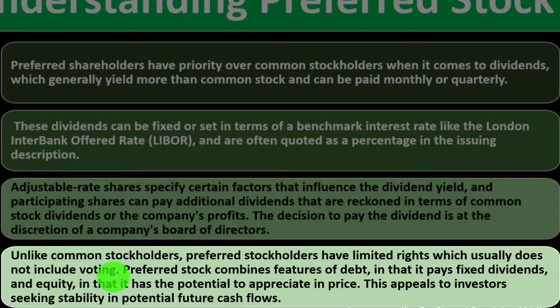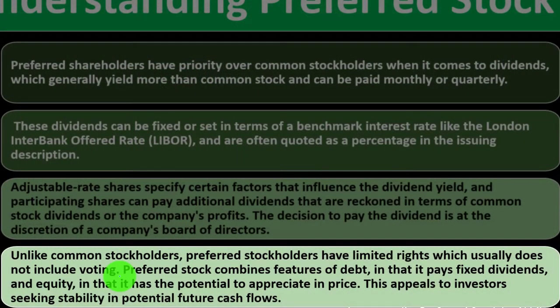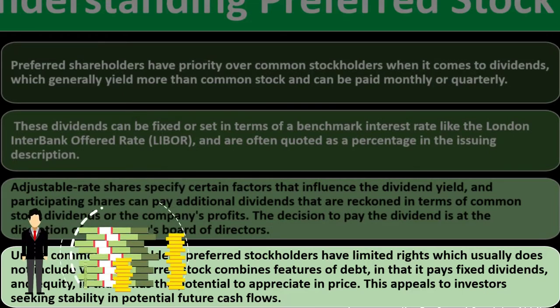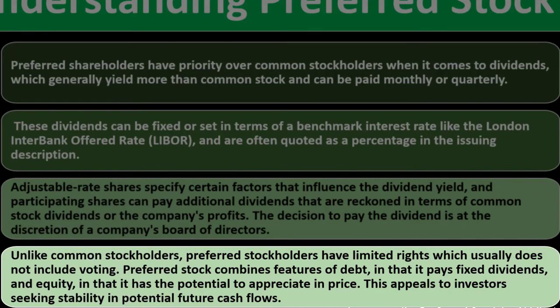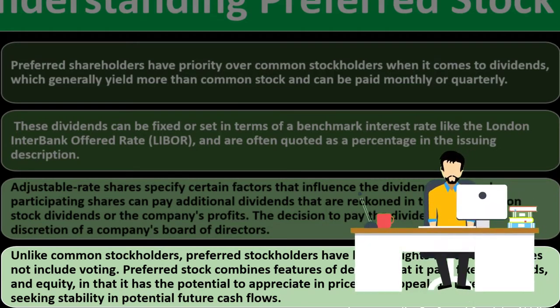Unlike common stock, preferred shareholders have limited rights, which usually do not include voting. You might think the name 'preferred' implies they have everything common stockholders have and more — but that's not how it works. Preferred shareholders don't have the same voting rights. The 'preferred' designation applies to specific things: they get their dividends allocated and are paid before common shareholders, but they don't have the same voting rights as common shareholders.